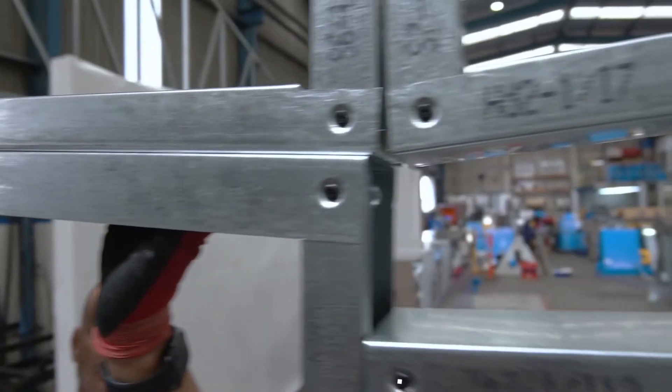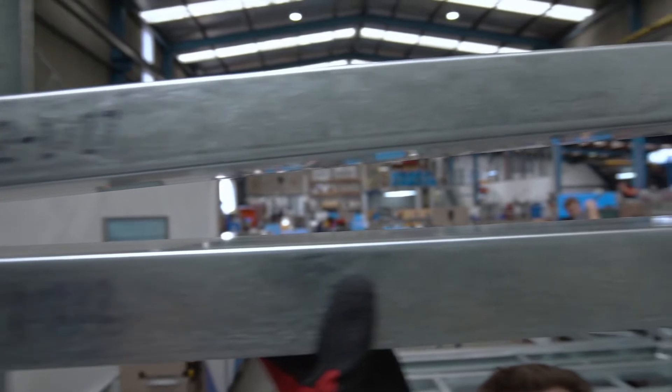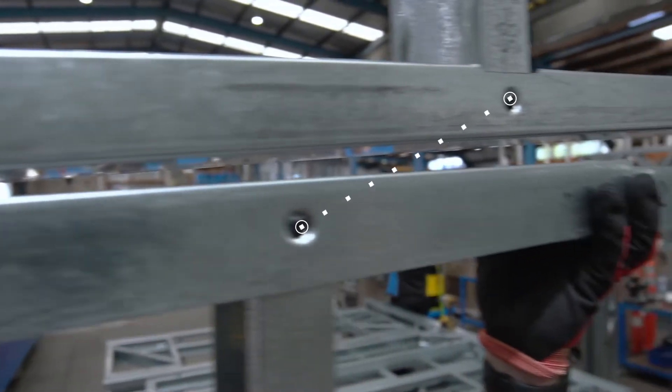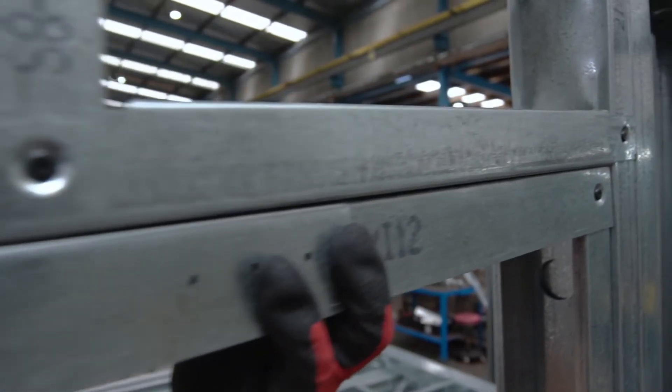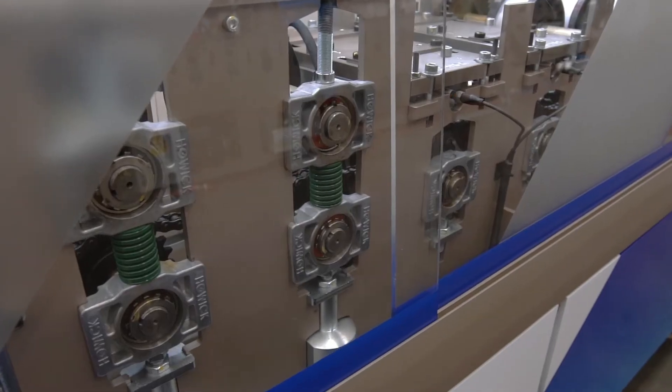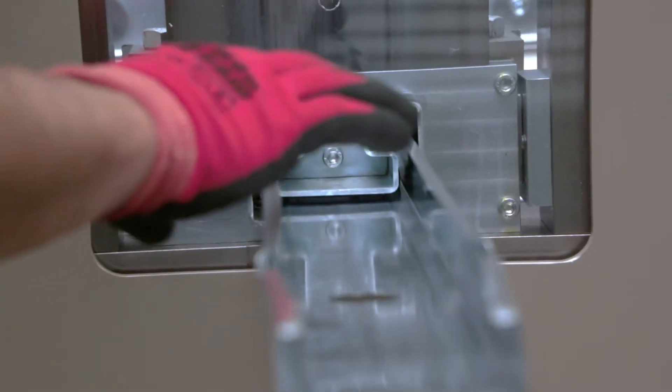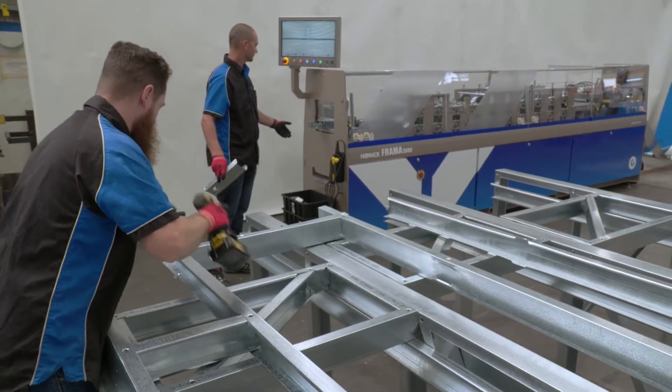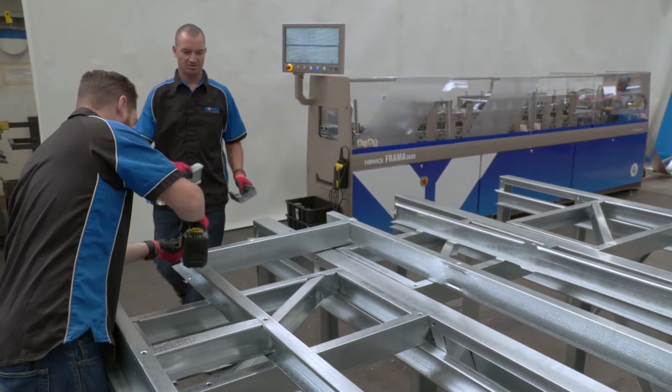Precision engineering ensures that even with extendable components, doors and windows within the framing remain completely true every time. Like all our machines, the Xtenda 3600 delivers with precision, so rework and wastage are kept to the absolute minimum.